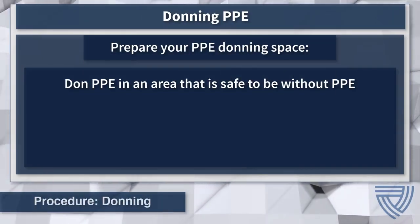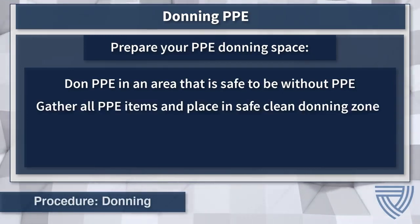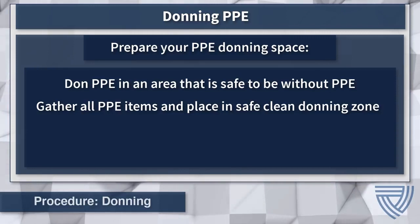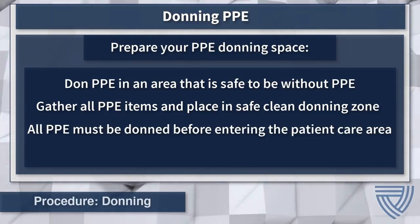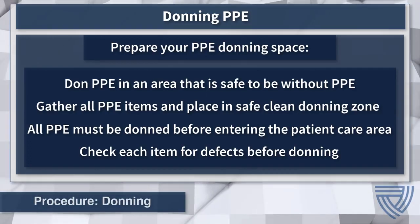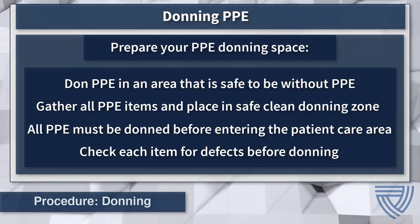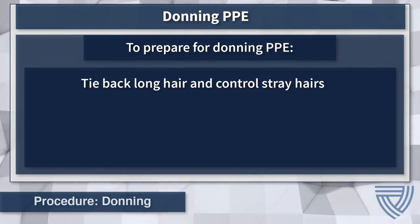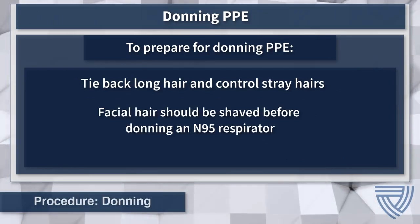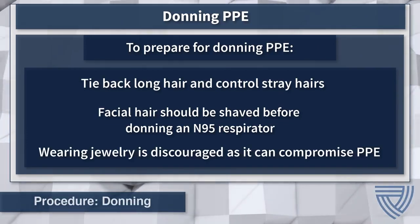Donning personal protective equipment should occur in a space where it is safe for personnel to be without PPE. Gather the PPE items required from the supply area to have in one location at the start of the donning process. All PPE must be donned prior to entering the patient care area. Check each item of PPE to ensure there are no defects, such as rips in the gown, seams, or creases on the face shield. Staff with long hair should tie it up in preparation to don PPE. Staff with facial hair should shave in order to wear an N95 respirator. Wearing jewelry is discouraged as it can lead to breaches in infection control and PPE.